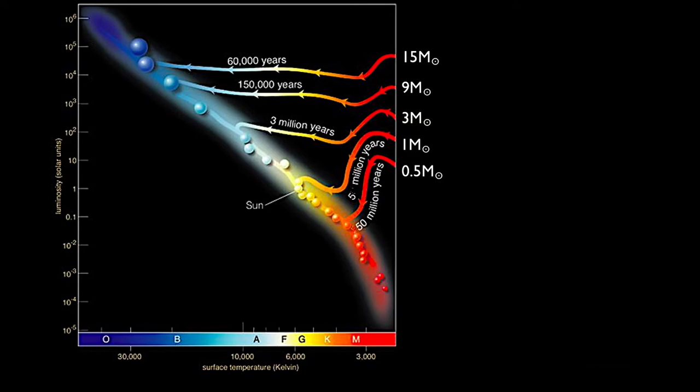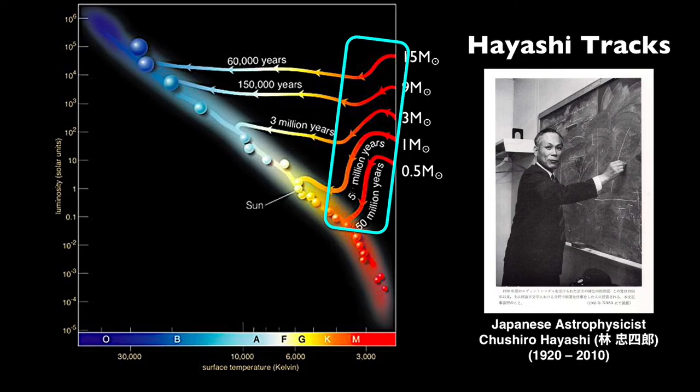Looking at the pre-main sequence evolutionary tracks of these differently-massed stars, there's a trend where luminosity drops as the stars continue to slowly heat up. This portion of the pre-main sequence evolutionary path is called the Hayashi track, named after Japanese astrophysicist Chushiro Hayashi.